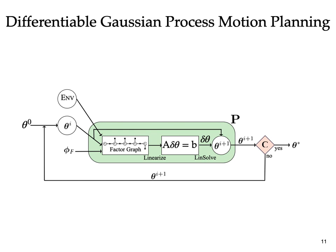The output theta i plus 1 is passed through a convergence check. If the optimization has not converged, theta i plus 1 is fed as input to P for the next iteration, otherwise the process is terminated and the locally optimal theta star is returned.